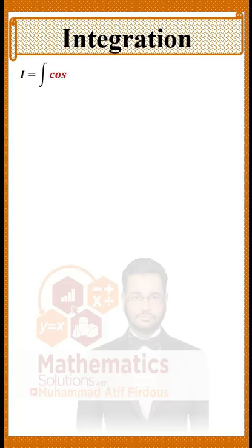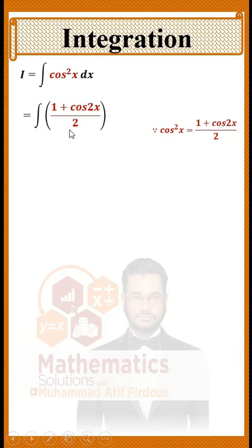To find the integral of cos²x, we must convert this into the half-angle identity. We know that cos²x is equal to (1 + cos2x) / 2.